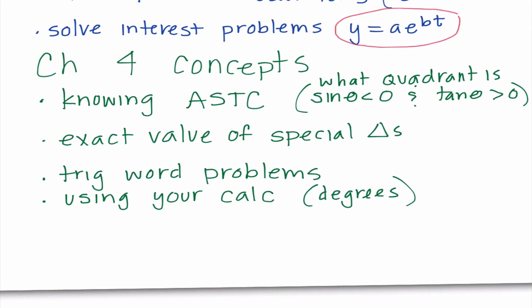Chapter 4, and this is getting more into what we've done recently. The first thing is knowing all students take calculus. Obviously, we need to know that a lot just when we're drawing out triangles. But specifically, there's going to be questions like what quadrant is sine less than zero and tangent is greater than zero, and so we would need to determine what quadrant that would happen in. You need to know the exact value of special triangles. So in this case, it might say something like cosecant of 5 pi over 6, and we would need to know how to solve that. There are some trig word problems. Once again, I would say those are more on the basic spectrum of word problems. You need to know how to use your calculator. If you're watching this right now and you have your calculator with you, if you could change it into degrees right now, that would be awesome, because we're going to need degrees for the entire final.